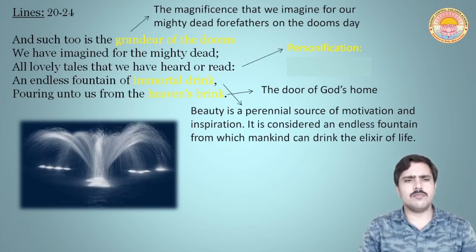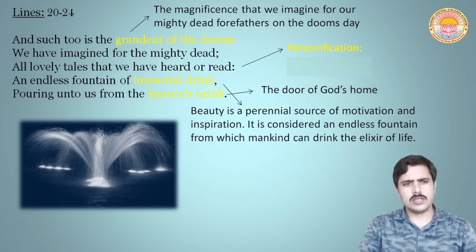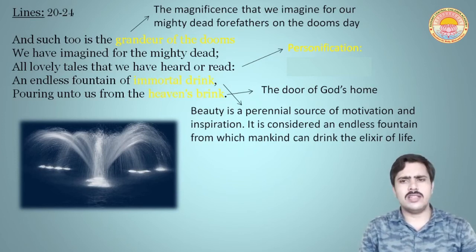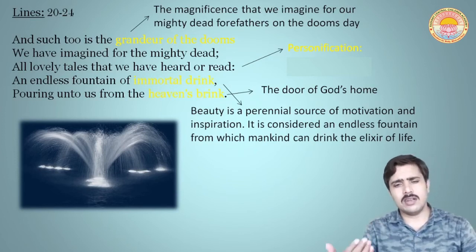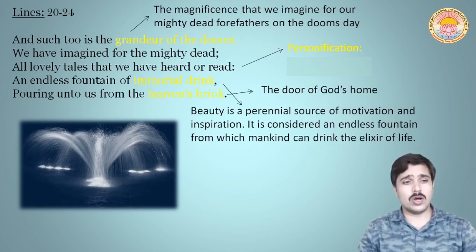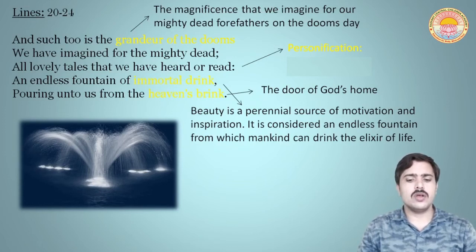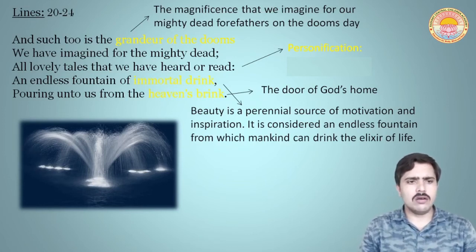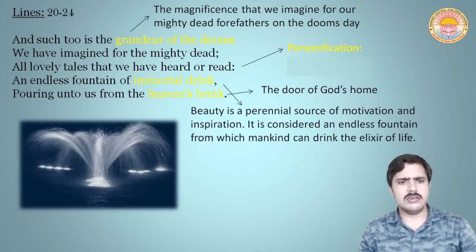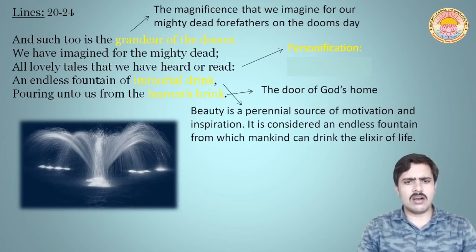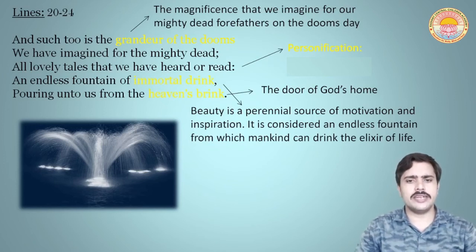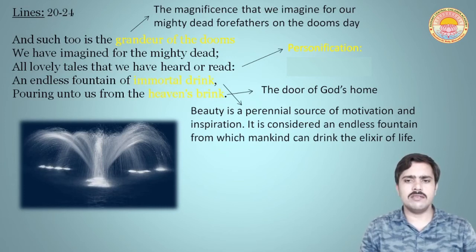So by these lines, the poet wants to tell us: the grandeur of the dooms means the magnificence that we have imagined for our forefathers that they will achieve even in death. The 'mighty dead' means those who made great achievements in their lives. All lovely tales that we have heard or read — they are endless. An endless fountain of immortal drink, pouring unto us from heaven's brink.